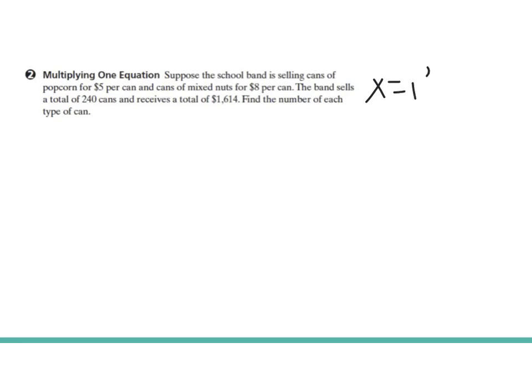X is going to equal popcorn, I'm going to put pop there. And Y equals nuts. If we sold a total of 240 cans, that's just X plus Y, the number of popcorn cans and the number of mixed nut cans equals 240.